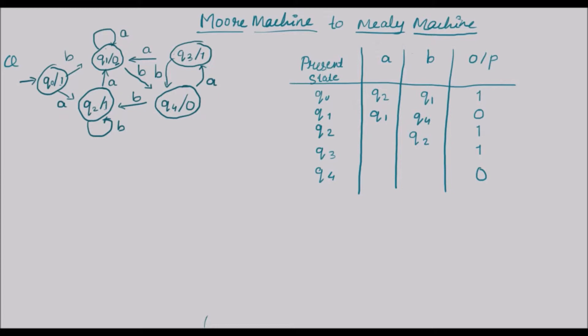Q2 is going to itself with b, q2 is going to q1 with a. Q3 is going to q1 with a, q3 is going to q4 with b. Q4 is going to q3 with a, q4 is going to q2 with b. So that's the state transition table for this transition diagram — at every present state with an input we go to the next state, and here is the output that the present state has.